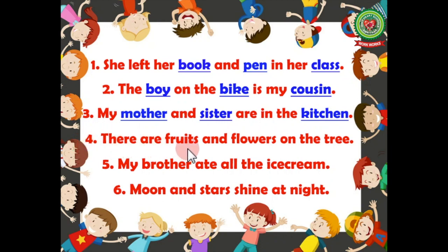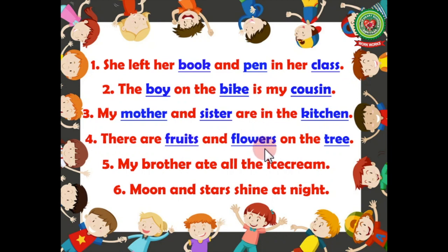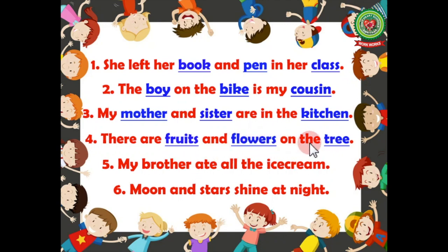Number four: there are fruits and flowers on the tree. Underline the nouns here. Let's check the answer. Fruits — name of a thing, so noun. Flowers — name of a thing, so noun. Tree — name of a thing, so noun. Therefore, fruits, flowers, and tree are the naming words, and we will underline three nouns here.